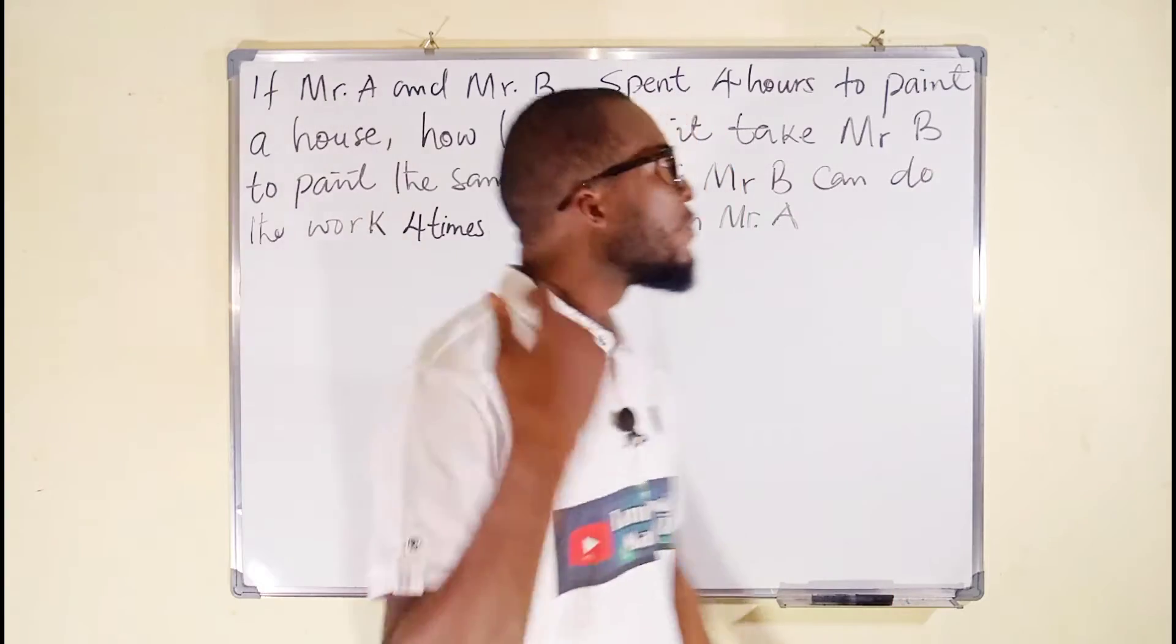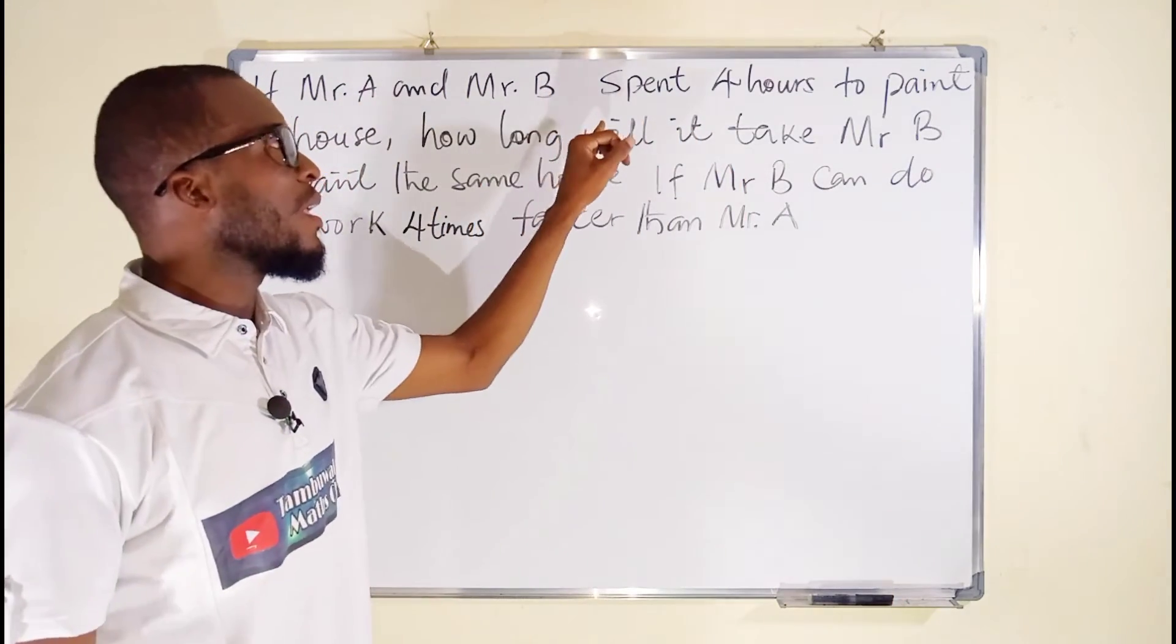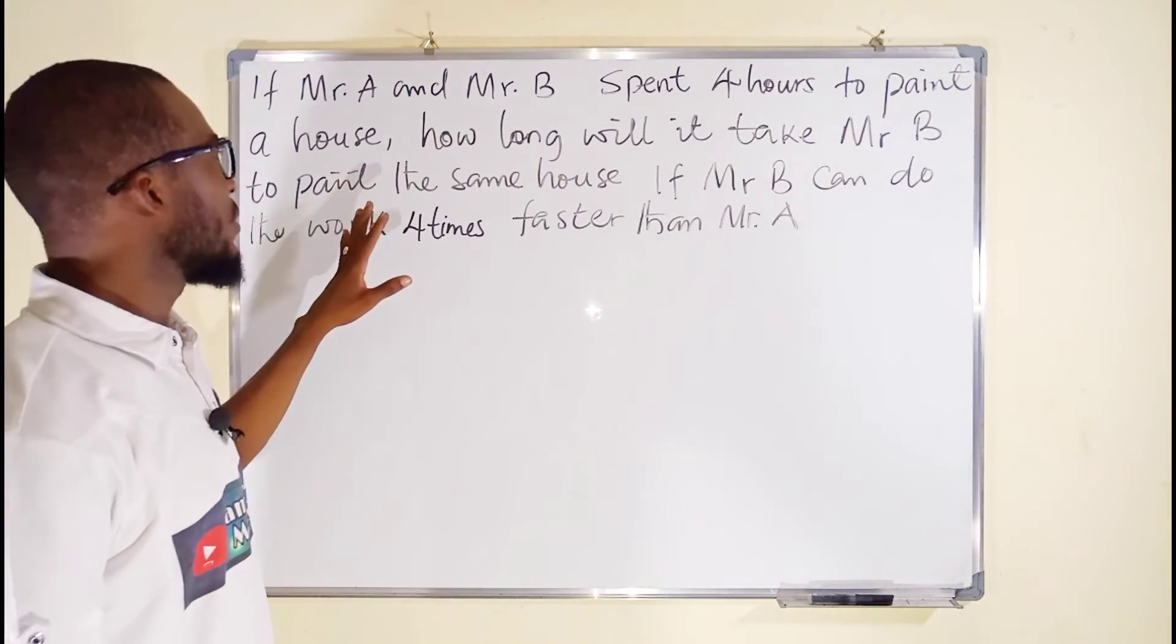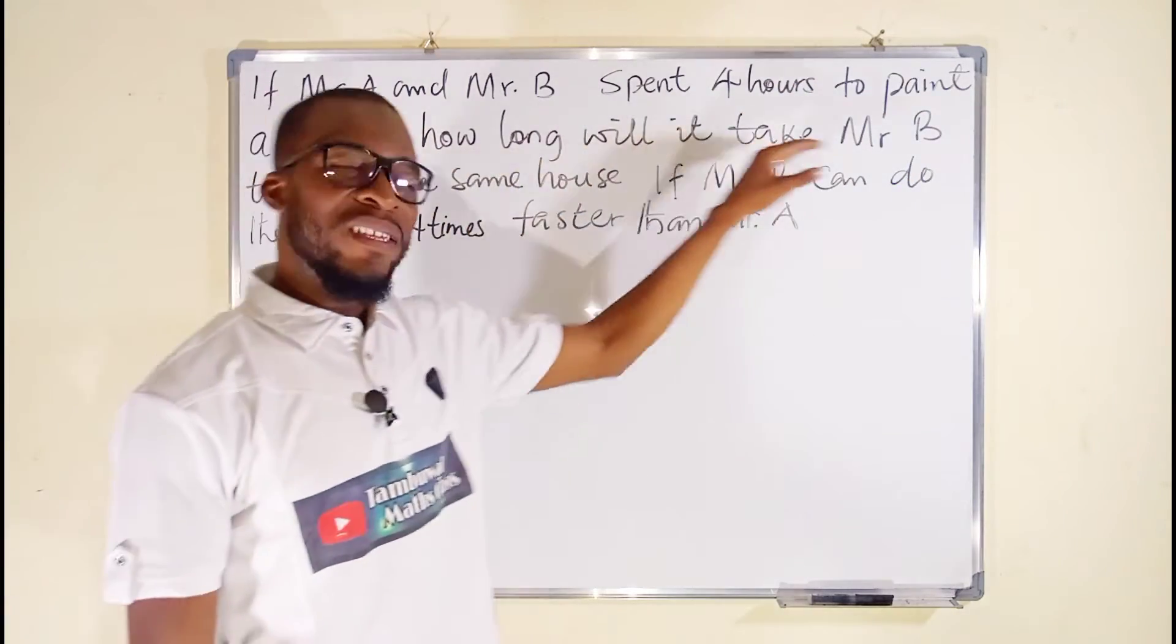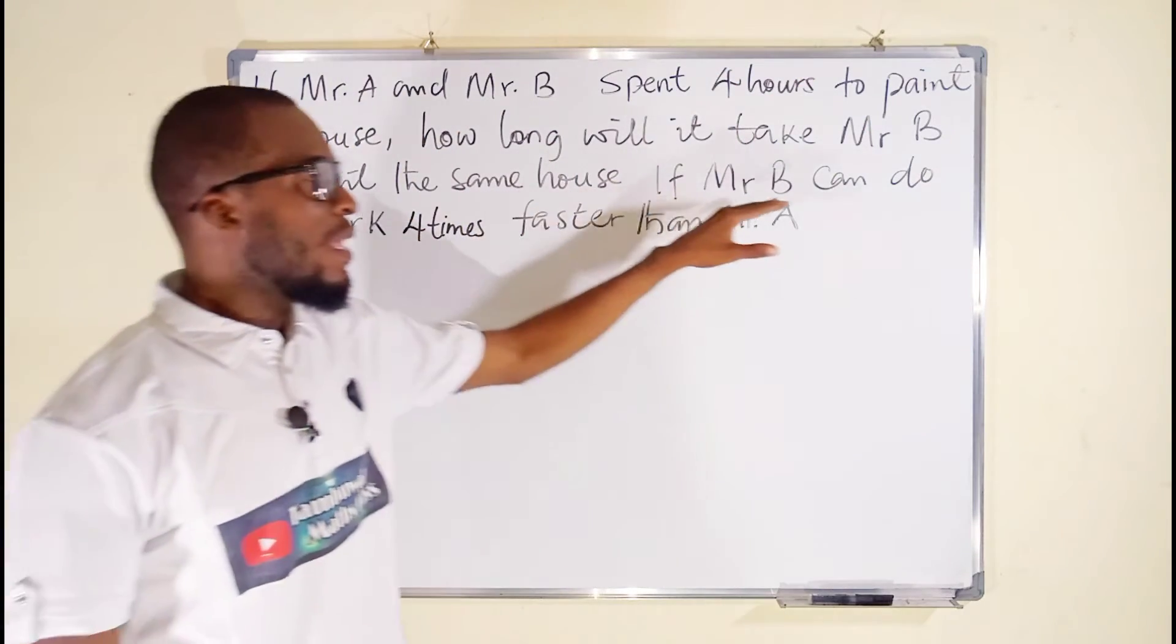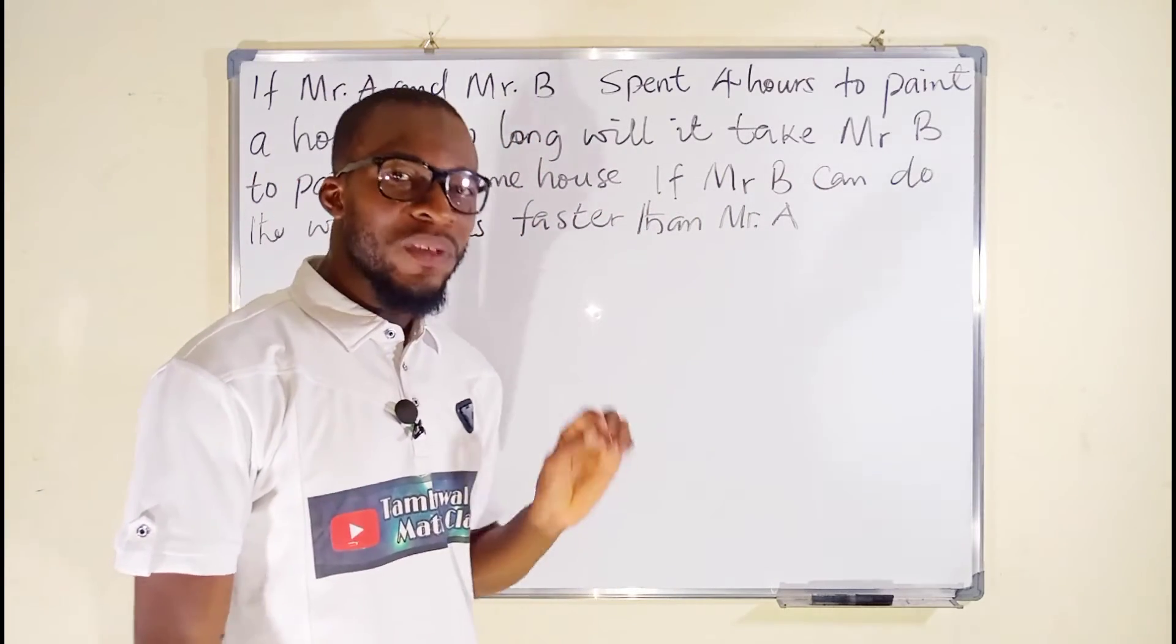The question reads: If Mr. A and Mr. B spent four hours to paint a particular house, how long will it take Mr. B to paint the same house if Mr. B can do the work four times faster than Mr. A?